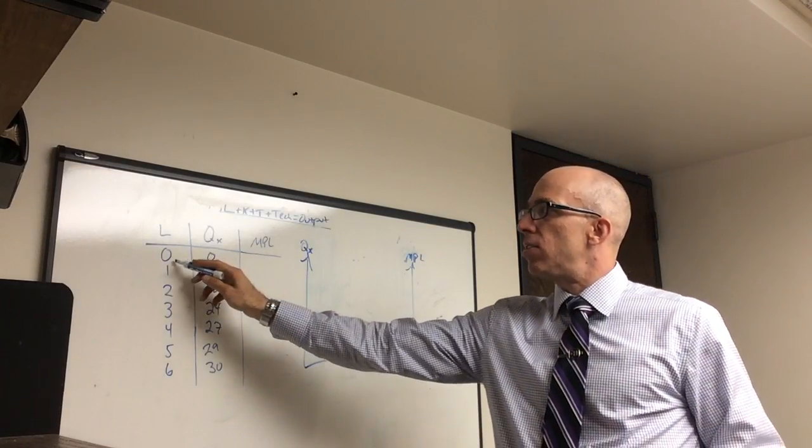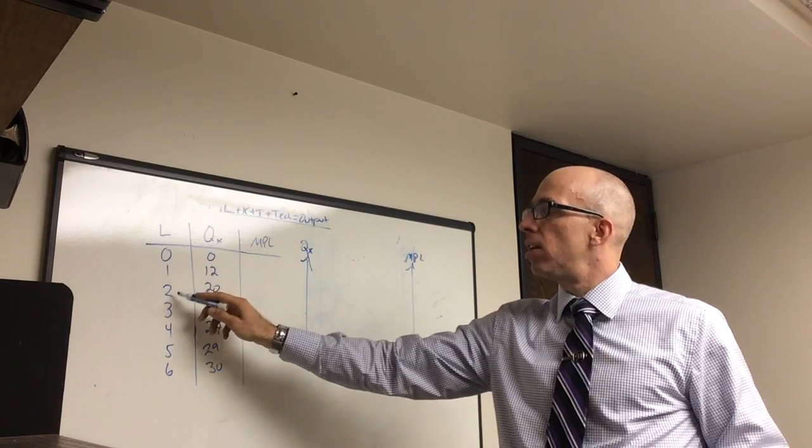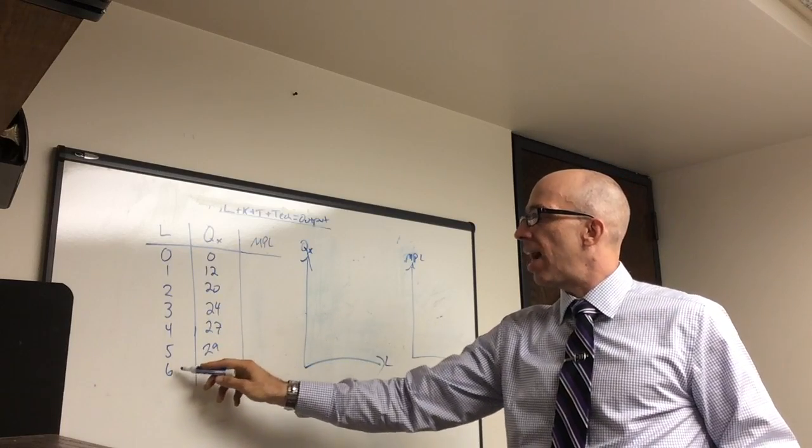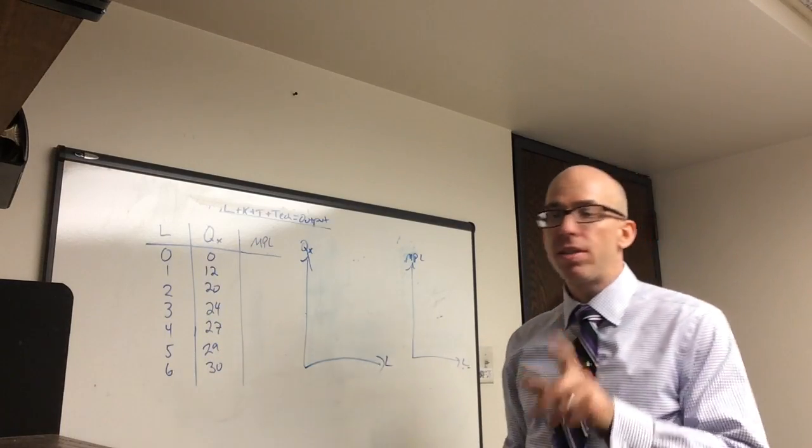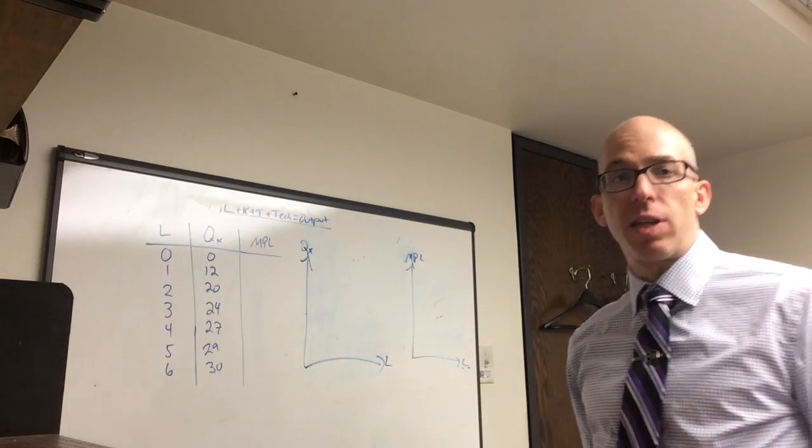Here I have 0 workers producing 0 output. 1 produces 12, 2 workers produce 20, 3 produce 24, 4 produce 27, 5 produce 29, 6 produce 30. Now if you notice, each additional step is less than the step before it, and that's the diminishing returns.